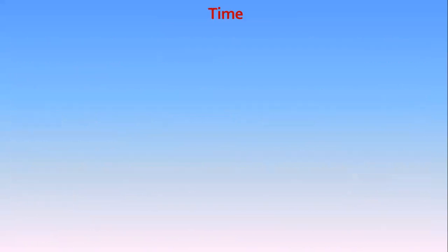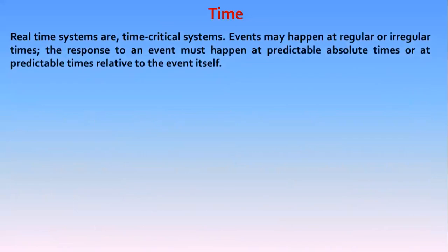Coming to time: real-time systems are, by their very name, time-critical systems. Events may happen at regular or irregular times. The response to an event must happen at a predictable absolute time or at a predictable time relative to the event itself.